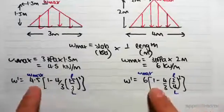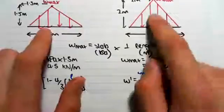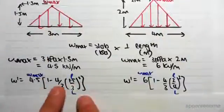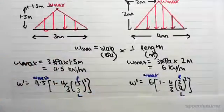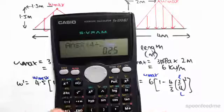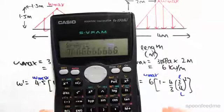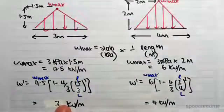We're then going to find W dash, which is the equivalent rectangular UDL from these triangles. So W max, little L is 1.5, big L is 3. So working this out, 1.5 divided 3 squared times by 4 divided 3, 1 minus that answer times by W max of 4.5 gives us 3 kN per meter.